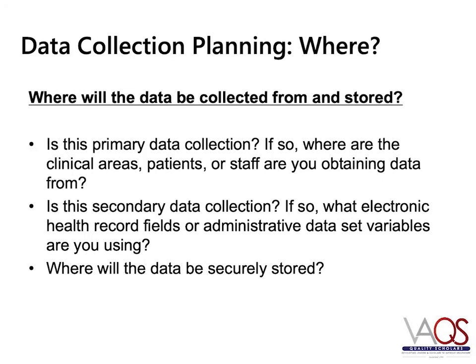As you decide what data will be collected, it is important to keep your colleagues informed so that they are aware of the measures you choose and the rationale for choosing them. The second question is where — and there are two parts. Where will the data be collected from, and where will the data be stored? Is this primary data collection from a clinical area or specific patients or staff? If this is secondary data collection from an electronic health record or administrative data set, what variable fields are you using? You also need to understand where you will store the data, as most healthcare entities have strict rules about data security and patient privacy.